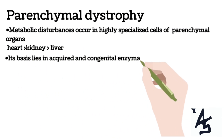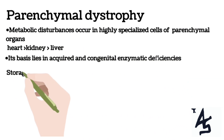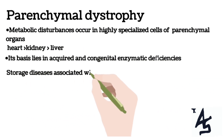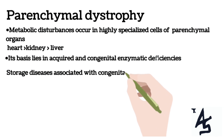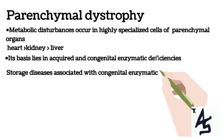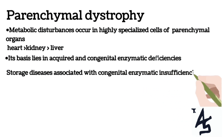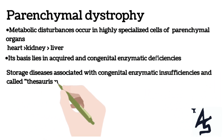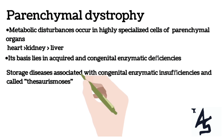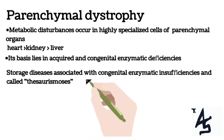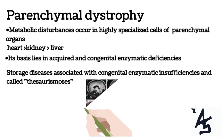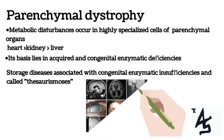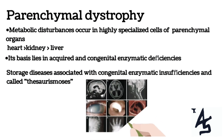As to how it occurs, acquired and congenital enzymatic deficiencies are considered the basis of the development of parenchymal dystrophy. Furthermore, there are a large group of storage diseases associated with congenital enzymatic insufficiencies, called thesaurismuses.